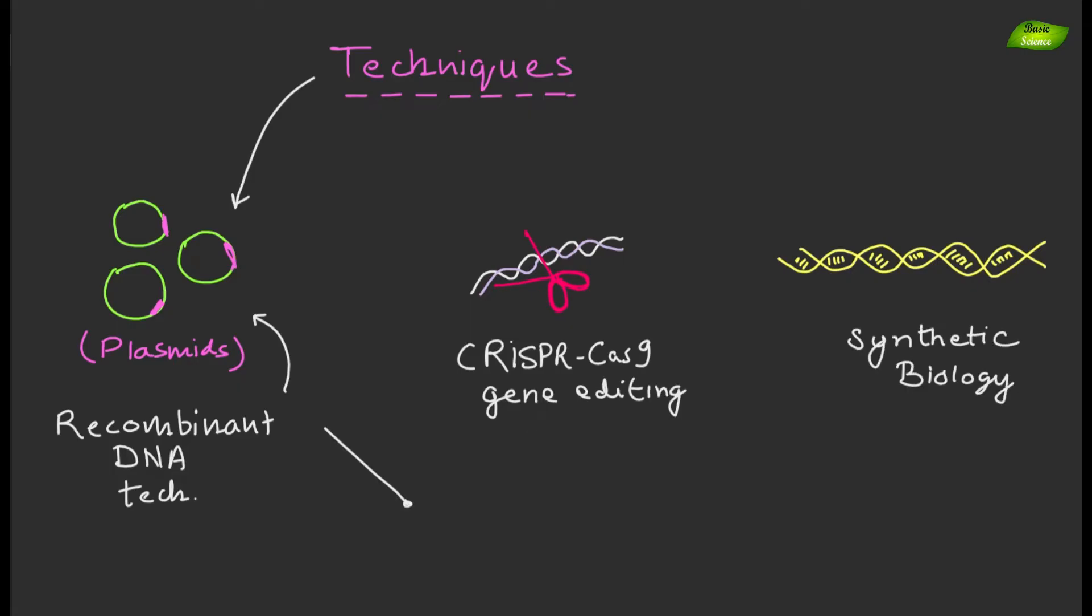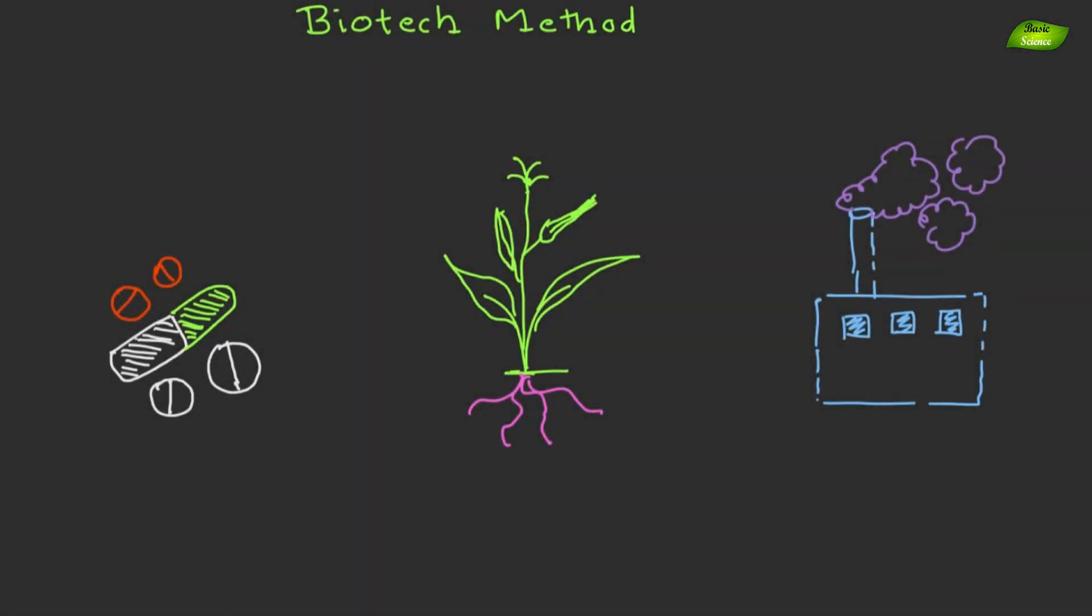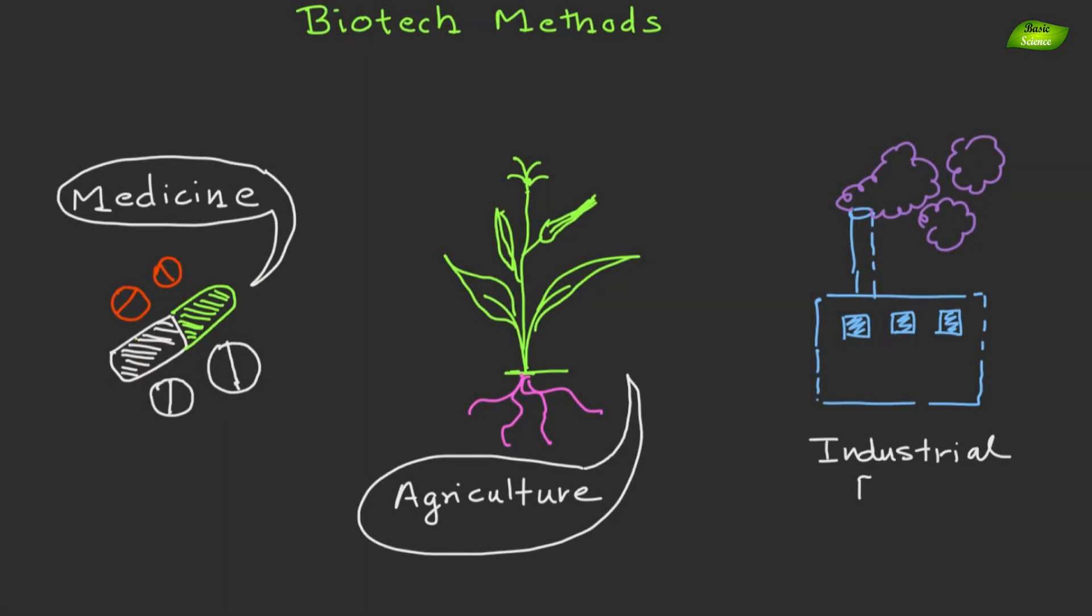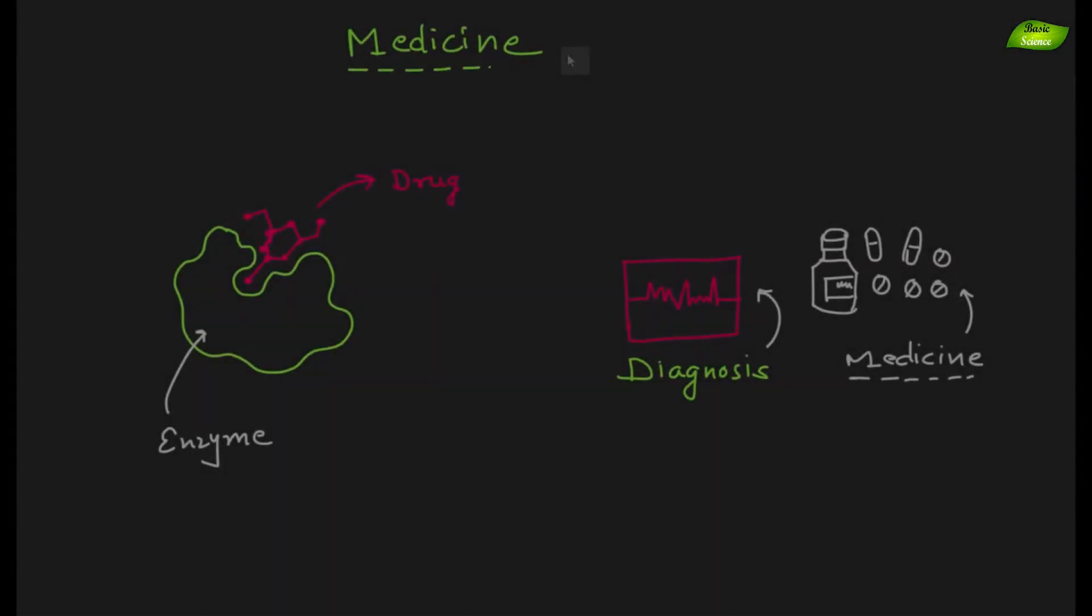DNA sequences, insert genes from one organism into another, and even create entirely new genetic constructs. These methods have revolutionized medicine, agriculture and industrial processes by facilitating the production of therapeutic proteins, genetically modified crops and biofuels.